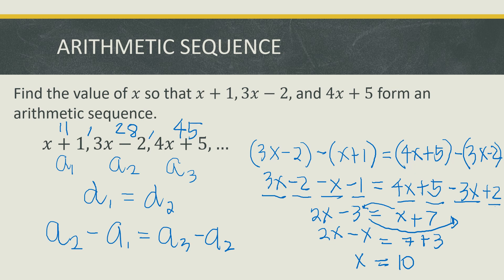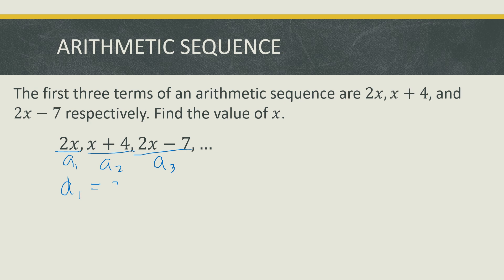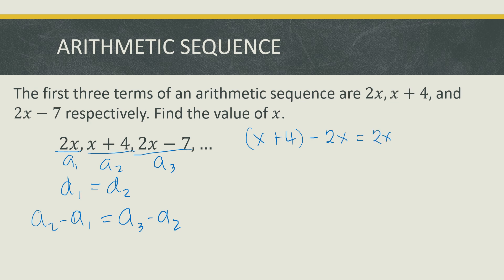Those are the first three terms of the arithmetic sequence for the second example. Let us try another: the first three terms of an arithmetic sequence are 2x, x plus 4, and 2x minus 7 respectively. Find the value of x. Let us show 2x as a sub 1, x plus 4 as a sub 2, and 2x minus 7 as a sub 3. The first difference should equal the second: a sub 2 minus a sub 1 equals a sub 3 minus a sub 2. So x plus 4 minus 2x equals 2x minus 7 minus (x plus 4).